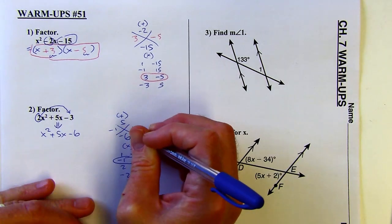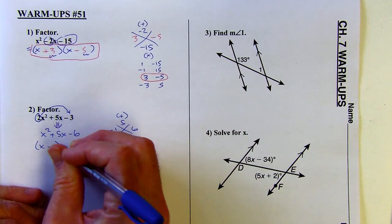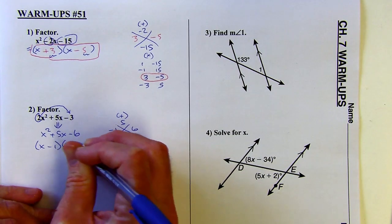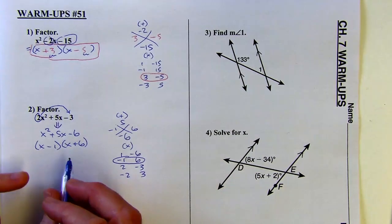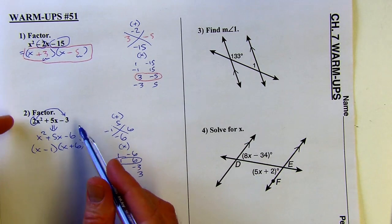So negative one and positive six is what should go in back of these parentheses. But this is not my final answer because this is that blue trinomial factor. It's not the original one.